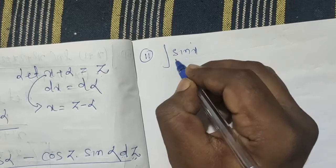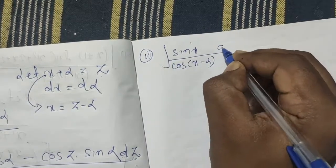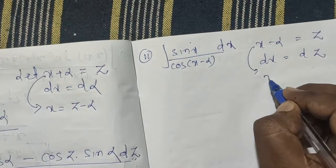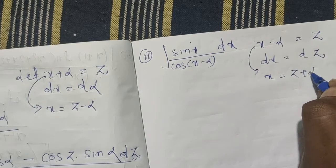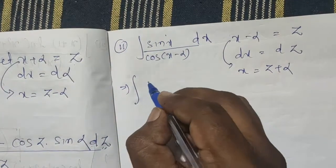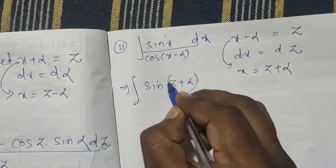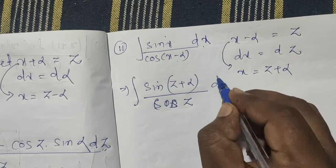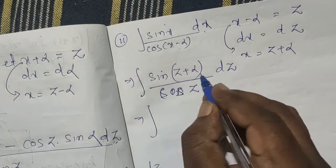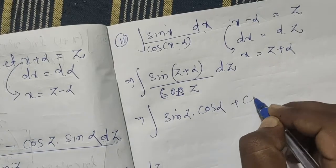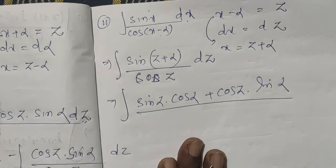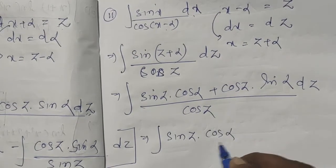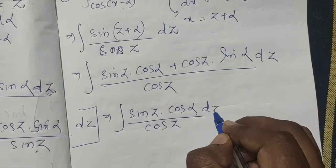Now question 8: the integral of sin x by cos(x minus alpha) dx. Let x minus alpha equal z, so x equals z plus alpha and dx equals dz. Substituting, we get sin(z plus alpha) by cos z dz.